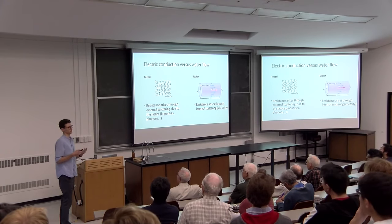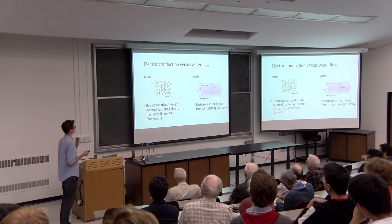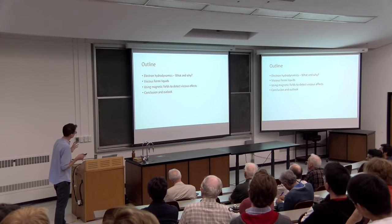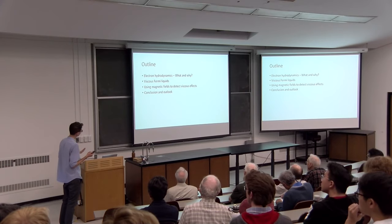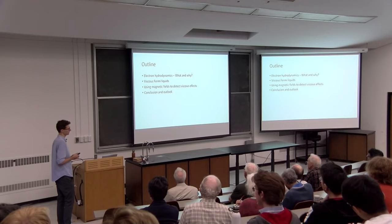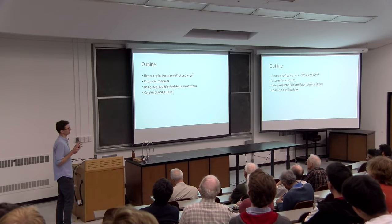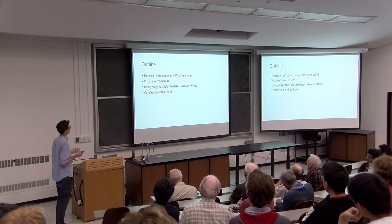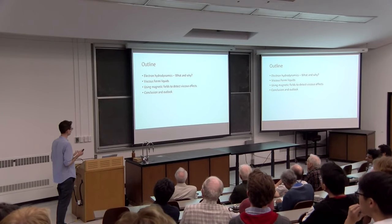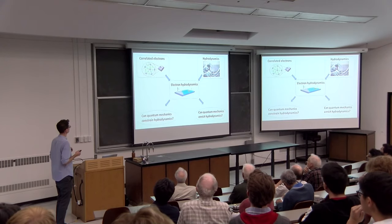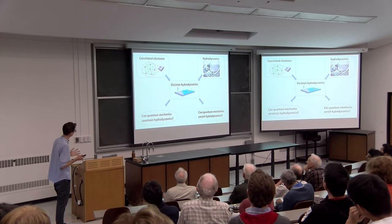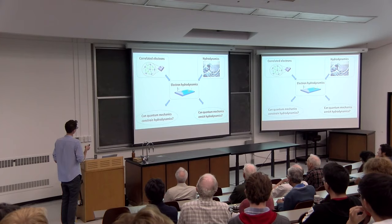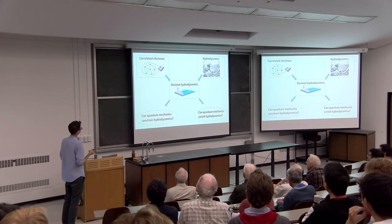The goal of today is to study solid-state systems in which electrons transport current like water. Here is the outline: first, I'm going to define electron hydrodynamics and why I think it's interesting — why it brings up interesting conceptual questions. Then I will focus on a particular example, probably one of the simplest, which is a viscous Fermi liquid. I will show how we can detect viscous effects by using magnetic fields. Then I will finish with a conclusion. The plan is to bring together two well-established fields: correlated electrons and solid-state transport on one side, and hydrodynamics on the other.